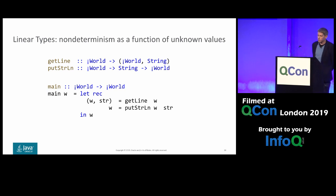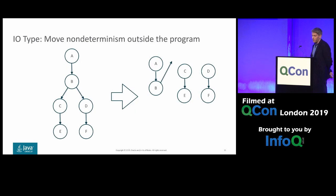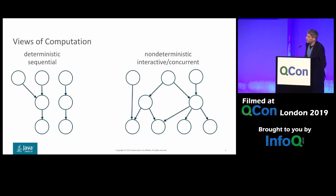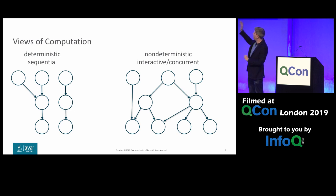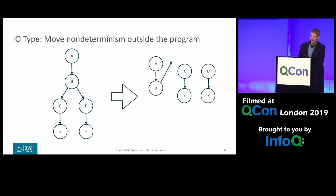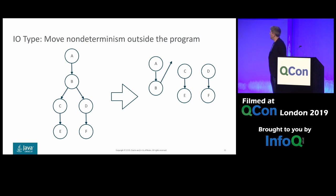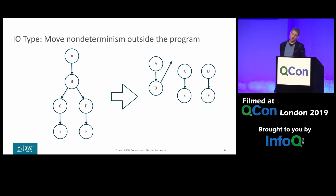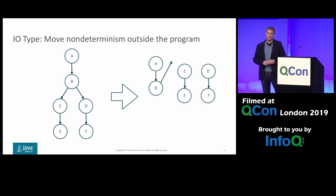Some languages already do that — Cogent, and perhaps Idris is experimenting with it — but this is not what Haskell does. There is another solution. Even in the deterministic picture, there is one allowed point of non-determinism: the beginning of the program. So we can move non-determinism outside the program: instead of performing IO inline, the program ends, returns to the runtime, the runtime reads the input, and then restarts the program at a new entry point depending on what the user entered.